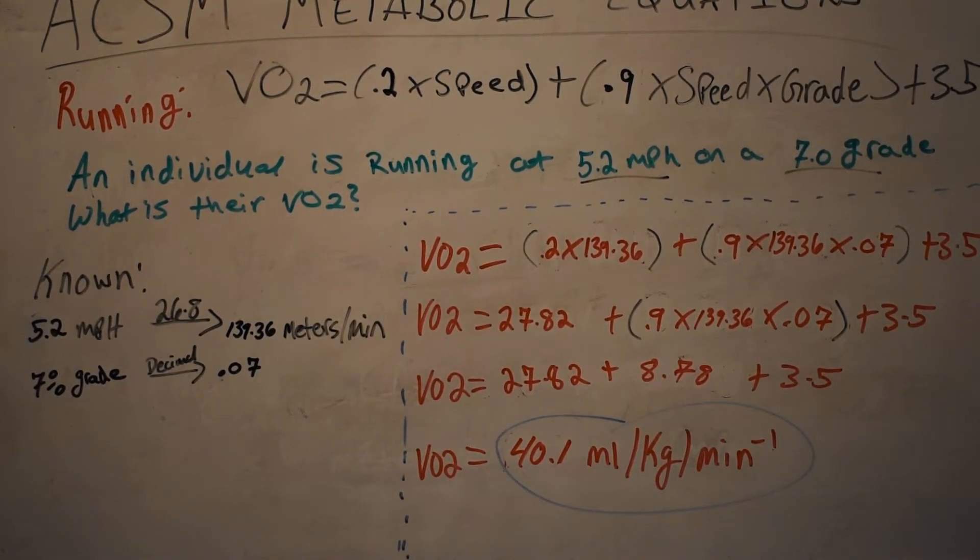So let's take this example: an individual is running at 5.2 miles per hour on a 7 percent grade. Now you might hear incline, and that's okay—grade and incline are the same exact thing. This question is asking what is their VO2? So right away you know, okay, I have to solve for VO2. That's what I'm solving for.